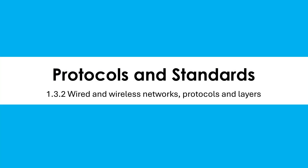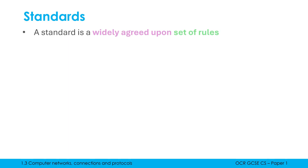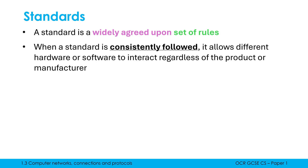We're going to talk about what protocols and standards are in this video. Standards are not only in the networking topic — we also have standards elsewhere in computing. A standard is a widely agreed upon set of rules. Standards are so important in computer science because when a standard is consistently followed, it allows different hardware or software to interact regardless of the product or the manufacturer. This gives us compatibility, where multiple different products can work together without any issues.